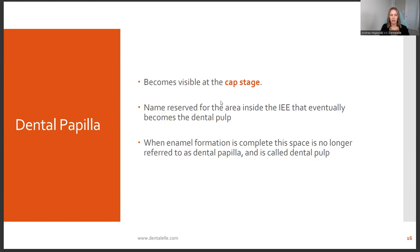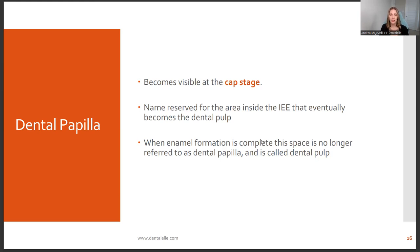The dental papilla is the area inside the inner enamel epithelium that eventually becomes the dental pulp. When enamel formation is complete, the space is no longer referred to as the dental papilla — it's called the dental pulp. So on the board exam, if they're talking about the dental papilla, this is before enamel formation is complete. Once enamel formation is complete and proper, it is now called the dental pulp within the inner enamel epithelium.